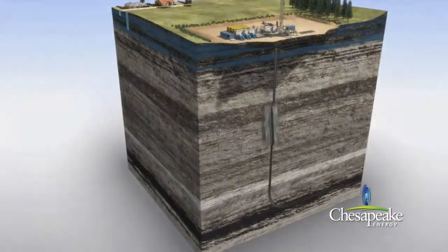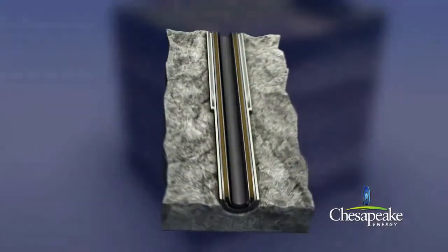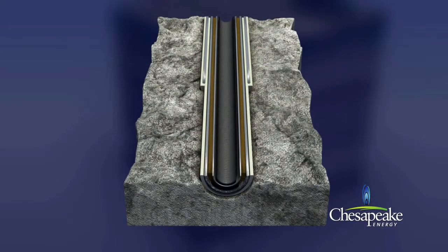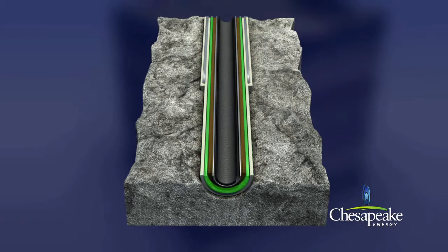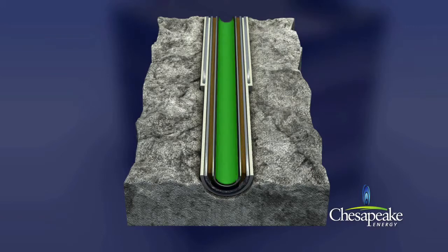A cross section of the well below surface reveals several protective layers: cement, conductor casing, cement, surface casing, drilling mud, production casing, and then production tubing through which the produced gas and water will flow. Seven layers of protection.